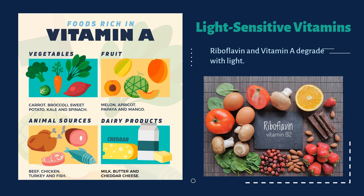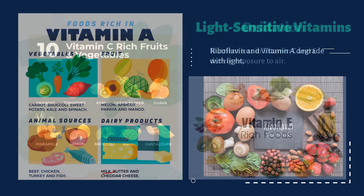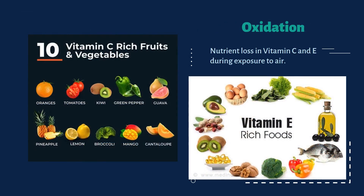Products rich in vitamin A include carrot, broccoli, melon, papaya, beef, milk and butter. You must have noticed that milk is packed in opaque cartons because it contains light-sensitive vitamins. Next is oxidation — another culprit. Exposure to air can degrade vitamins in cut fruits and vegetables, reducing their nutritional value.